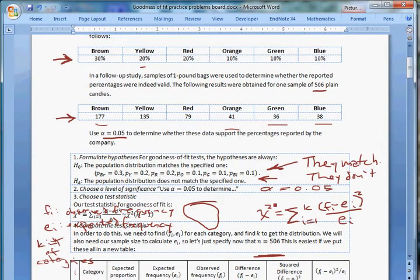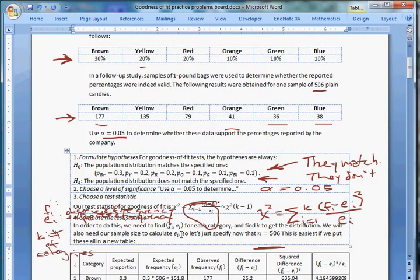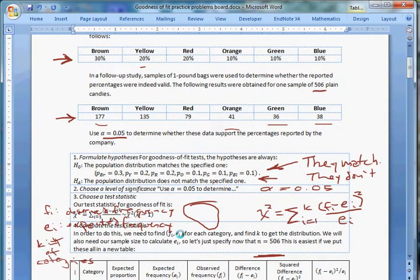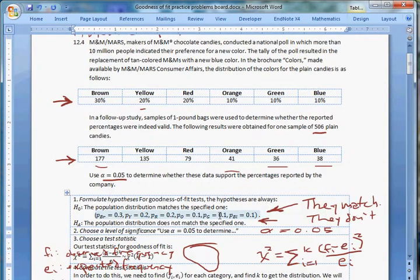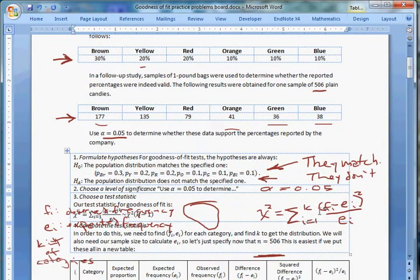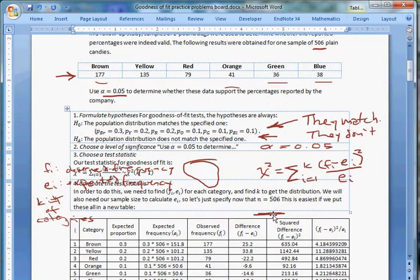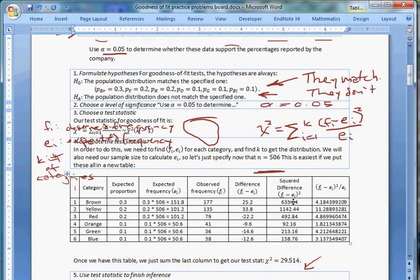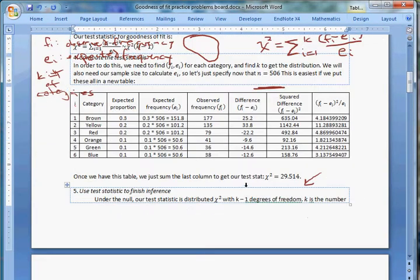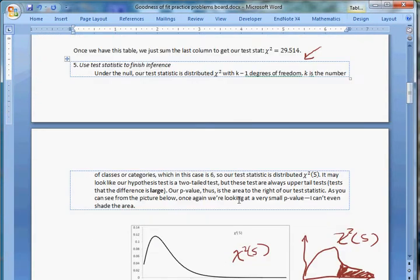Our hypotheses are always they match versus they don't. This is our test statistic, which is distributed chi-squared with k-1 degrees of freedom. We build a table like this to find the squared weighted squared deviation. And then once that's done, we add them all up, and that gives us a chi-squared test statistic. You use that, and you should be good. From there, it's just like every other problem we've done.